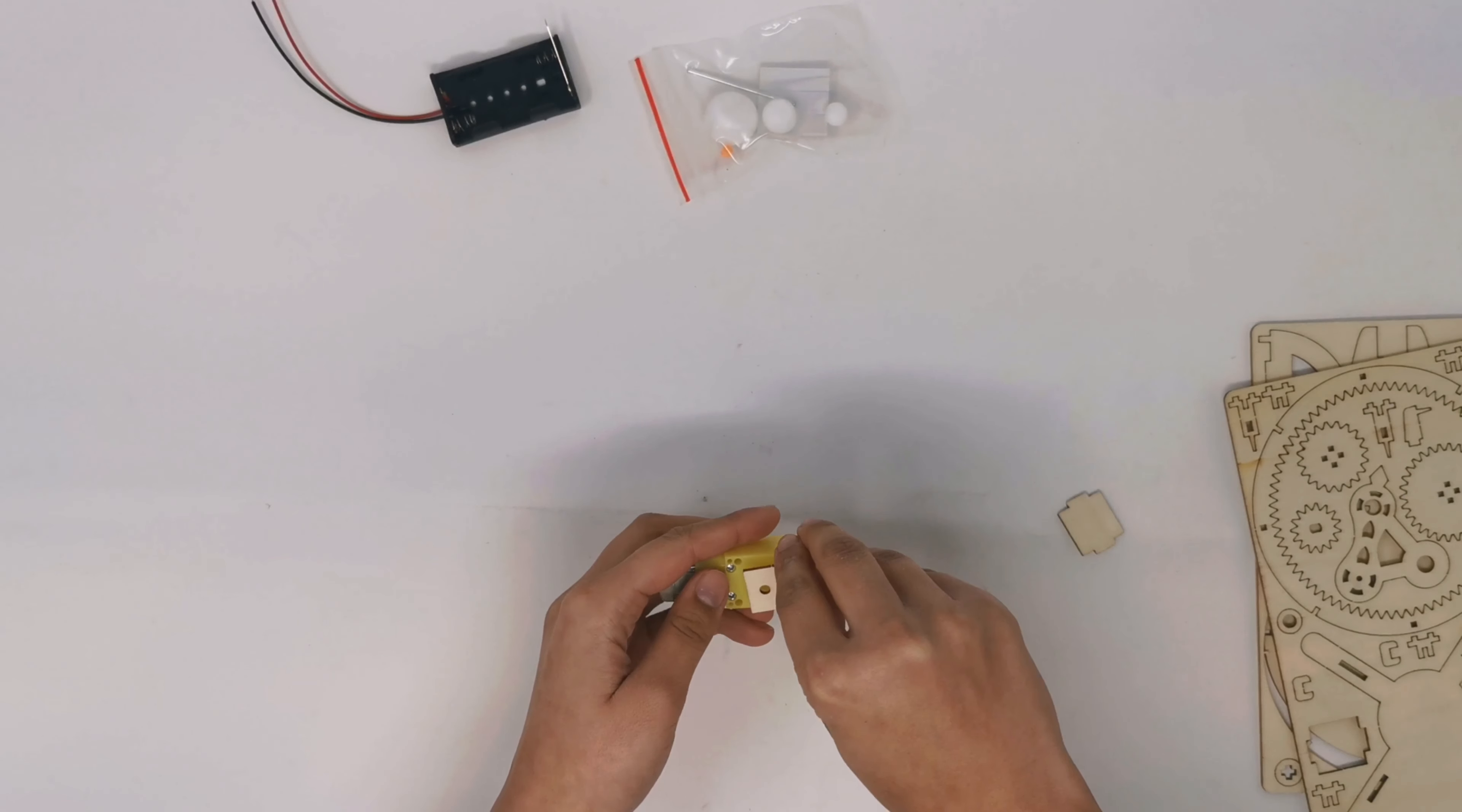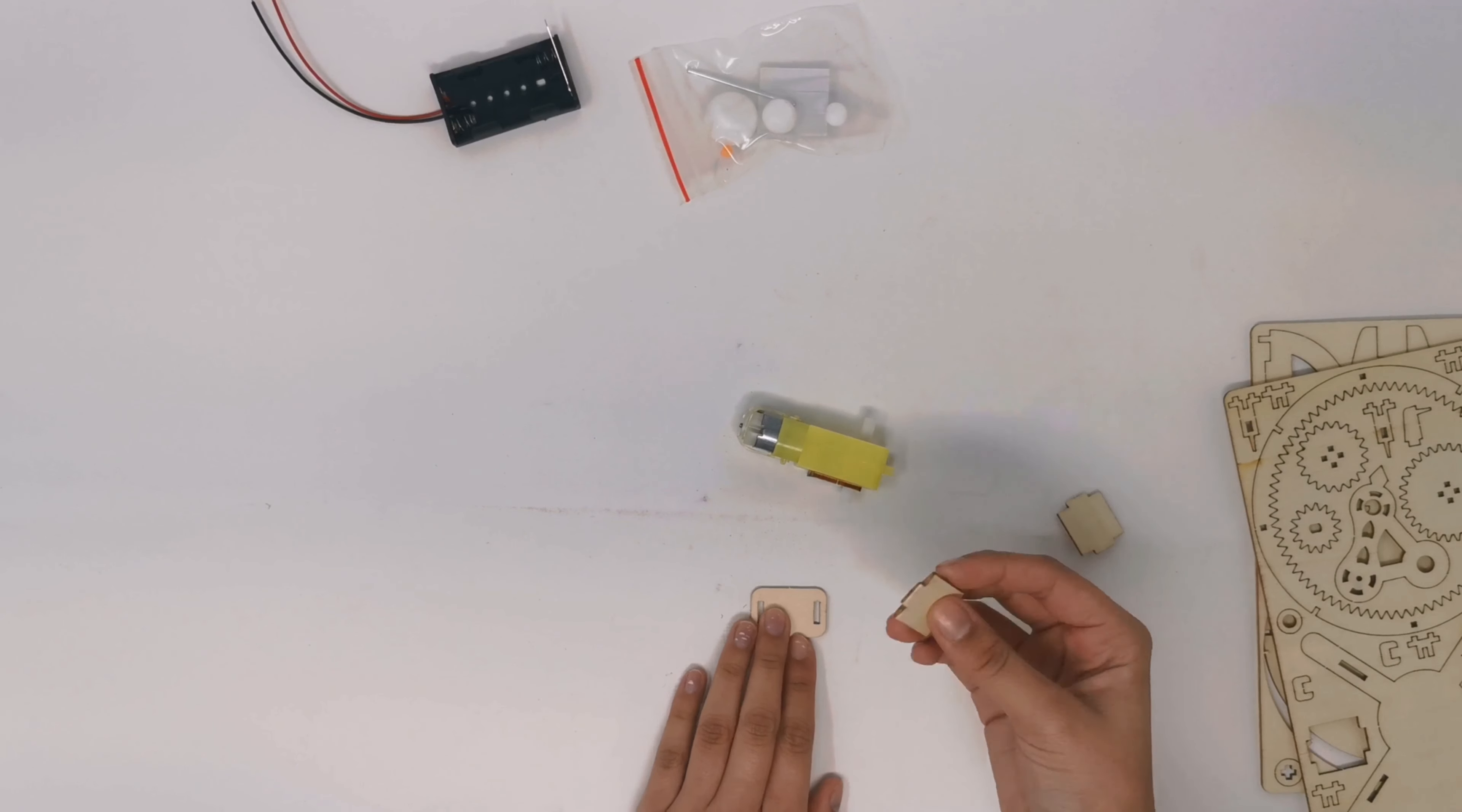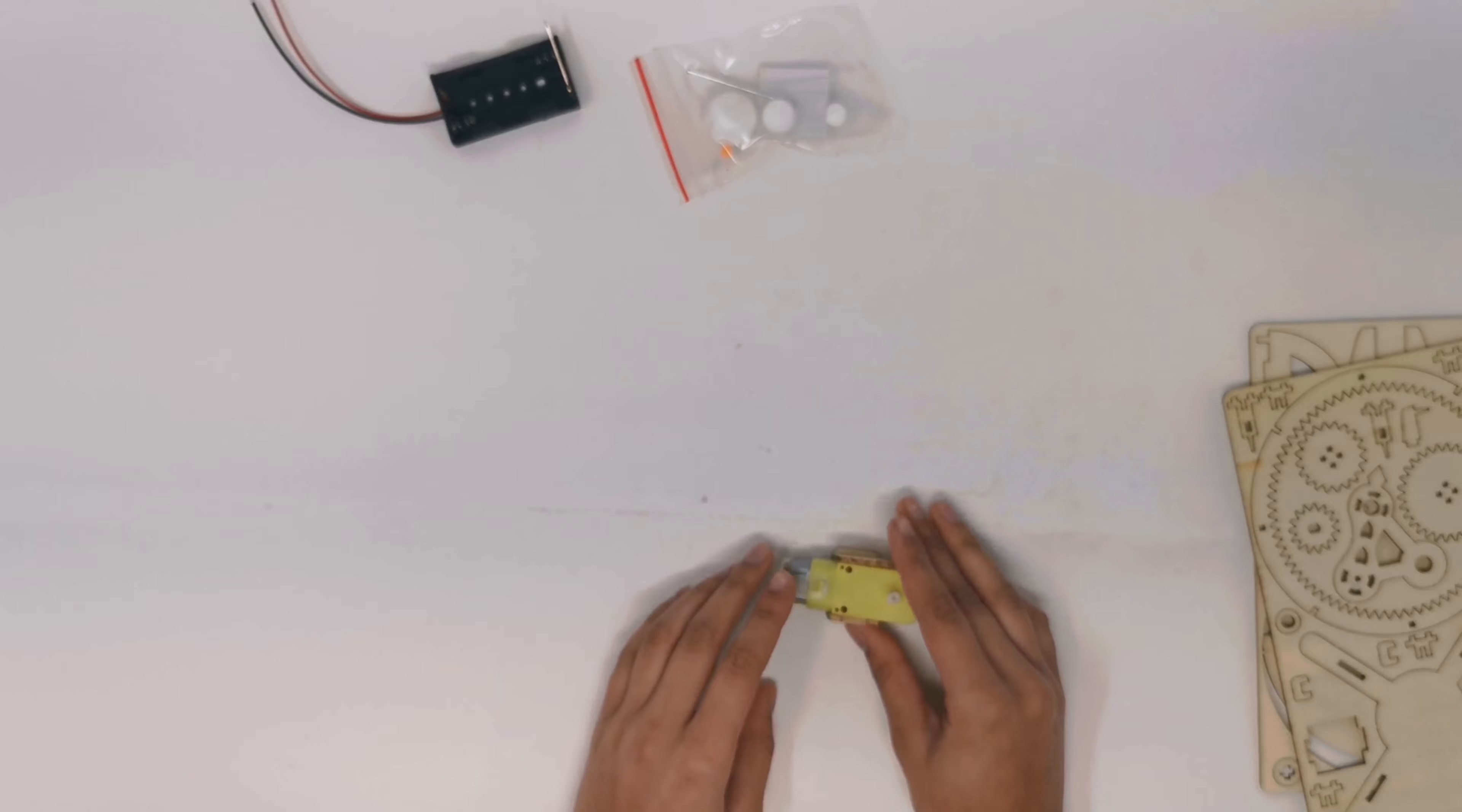So this first piece, you are going to take and add it to the top of the motor to make sure that the circle aligns. Then, you are going to want to take your side pieces and fit them in. These can be a little tricky to get in, so make sure you utilize your sandpaper. Once those are in, you are going to want to put your motor on top, just like that.